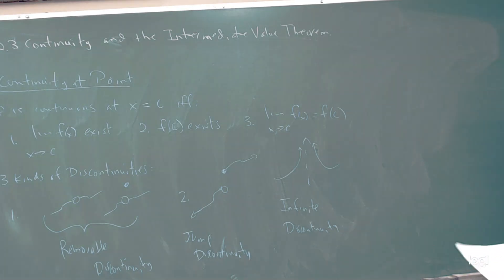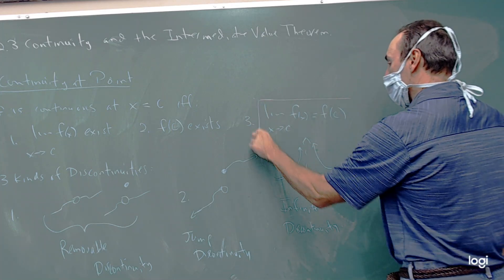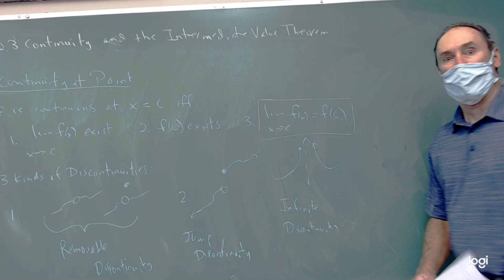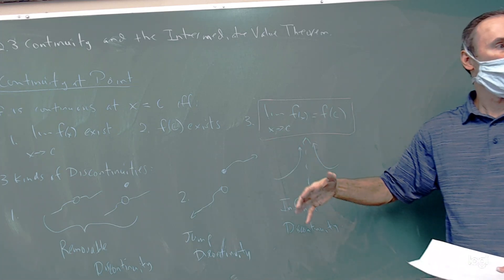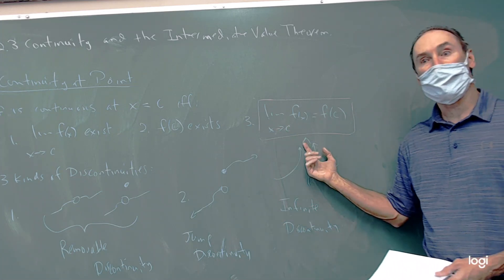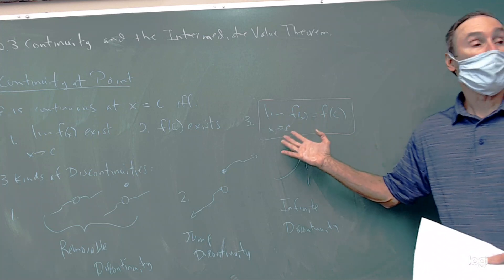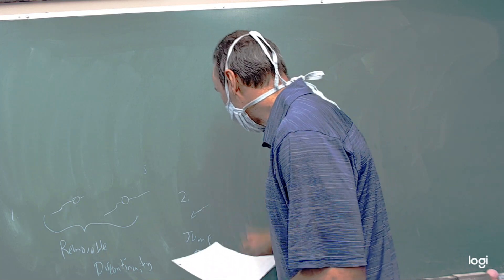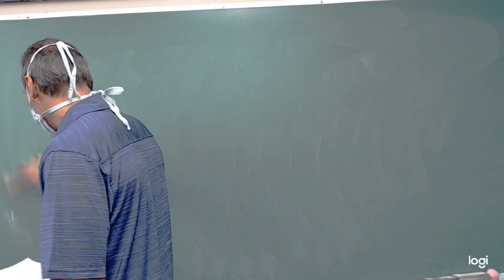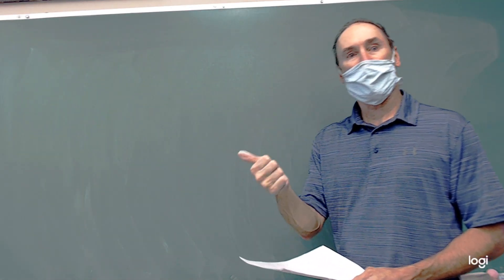So that's how we define continuity at a point — it's got to satisfy those three things. Sometimes people say there's a shortcut: if the limit is equal to the value of the function, it must be continuous there, because implied in that is that for these to be equal, they must both exist. So anytime you're asked to justify your answer on a continuity question, you have to communicate that the three conditions have been met — the limit exists, the function is defined, and the limit equals the function.